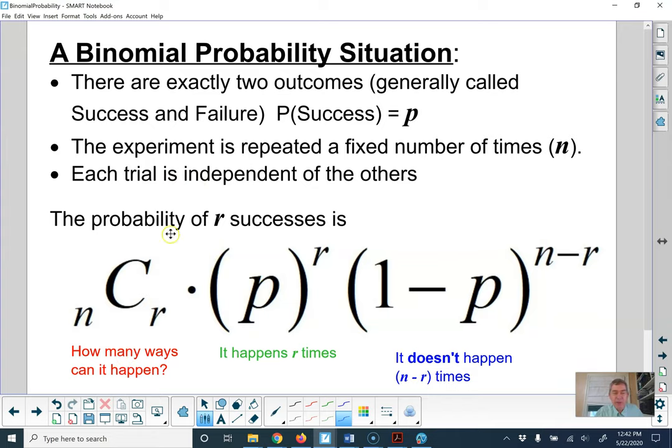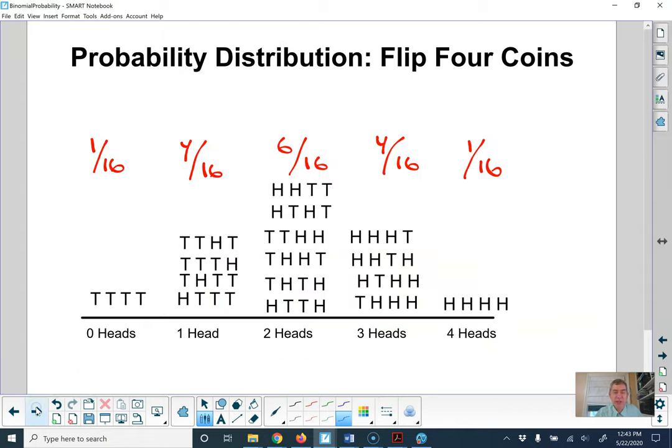Three parts to the equation for the probability of getting R successes. The first part is how many ways can it happen. That's N choose R, the number of trials choose the number of successes. The second part is the probability that it happens those many times. So the probability that you made a free throw, say 70%, five times, 0.70 to the fifth power. If you make it 70% of the time, then you also miss it 30% of the time. So you also need the probability that it doesn't happen so many times. So we'll put those pieces together.